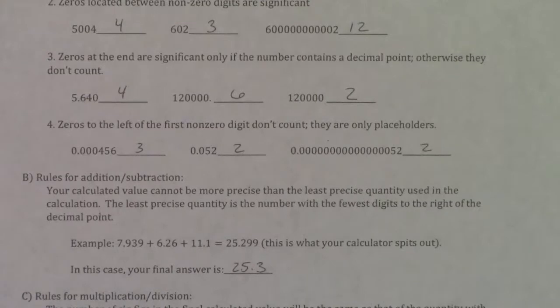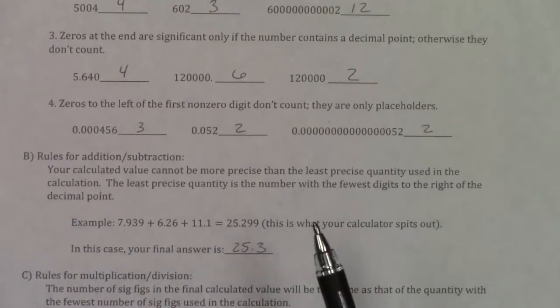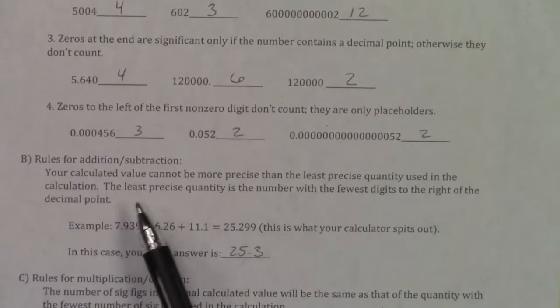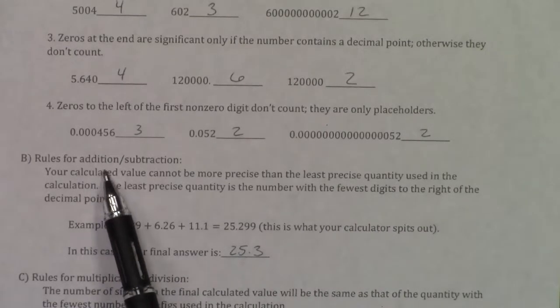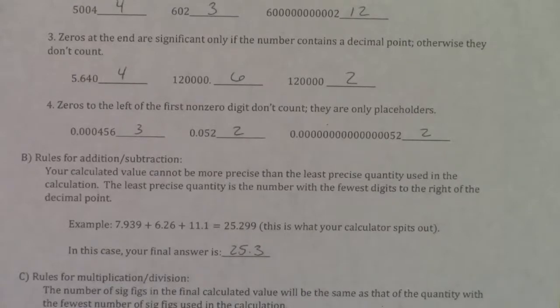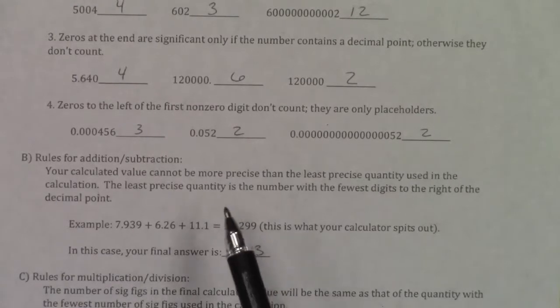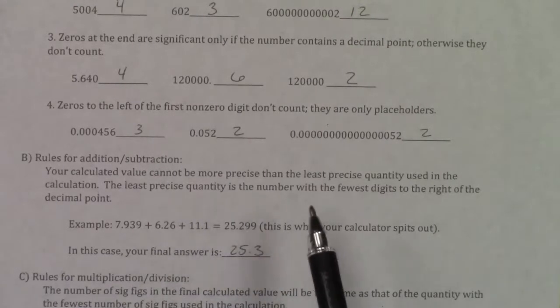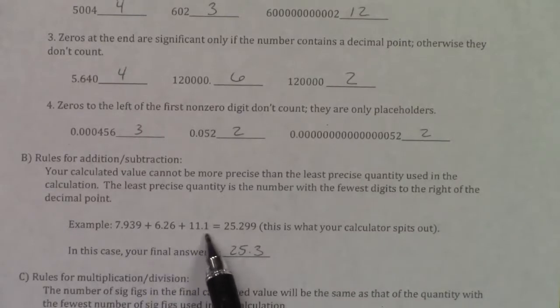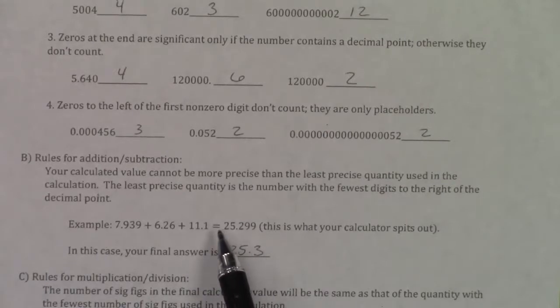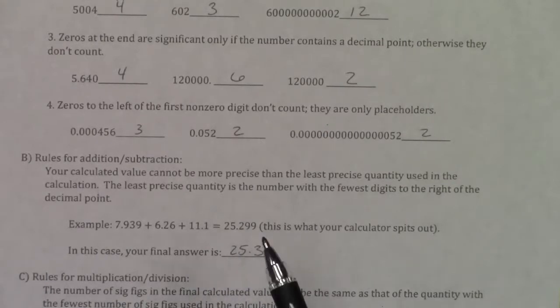Let's now talk about addition and subtraction. Your calculated value cannot be more precise than your least precise quantity. The least precise is the number with the fewest digits to the right of the decimal. If you take a look at these 3 numbers that I'm adding together, the 11.1 is the least precise because it only has 1 number to the right of the decimal. Therefore you round to 1 decimal place.